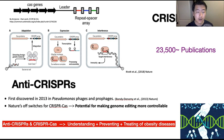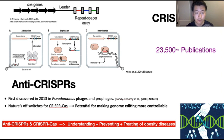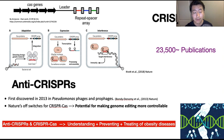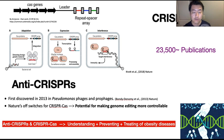Anti-CRISPRs are CRISPR-Cas's natural off switches. This gives anti-CRISPRs huge potential for making genome editing more controllable, because CRISPR-Cas is very well applied in the field of genome editing. So CRISPR-Cas and anti-CRISPRs, when used together, have the potential of making genome editing more controllable — in other words, more safe.